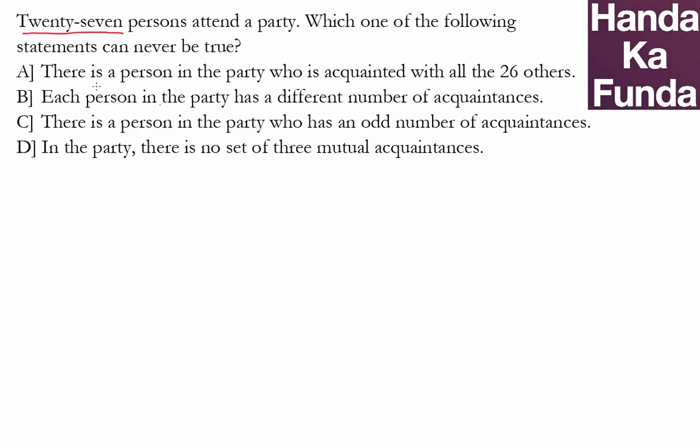The first statement is there is a person in the party who is acquainted with all 26 others. That is quite possible. There is no reason why there cannot be a person who is acquainted with all of them.